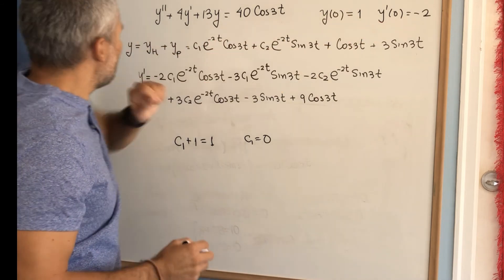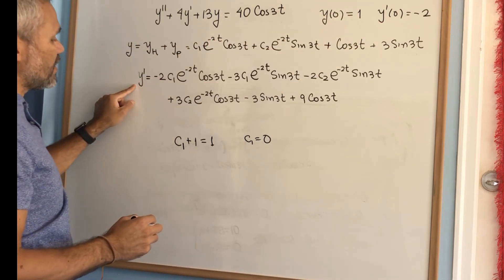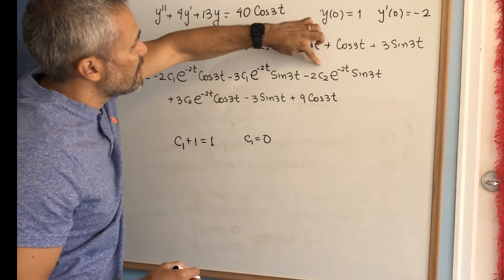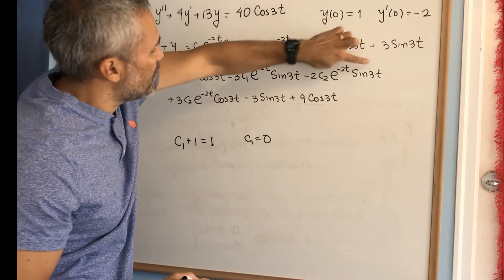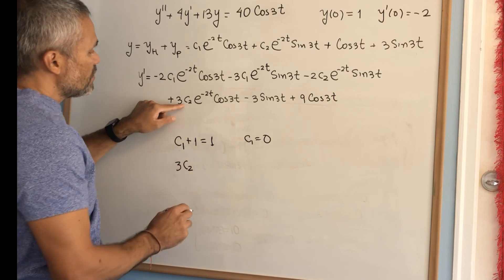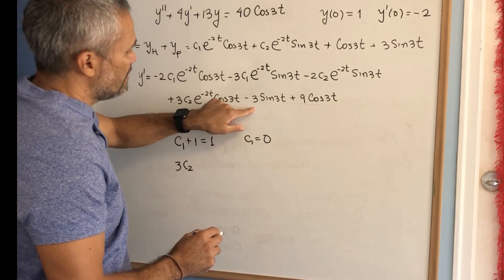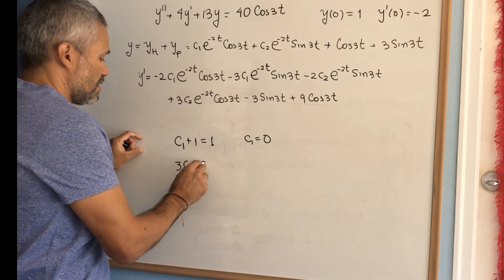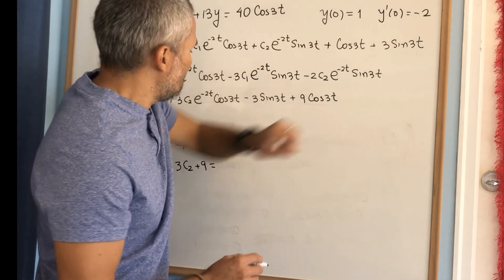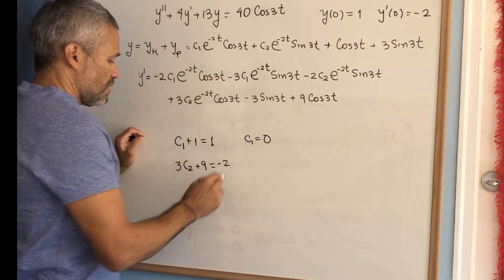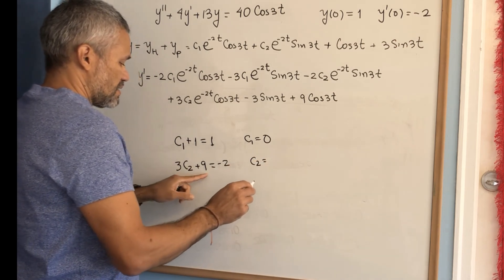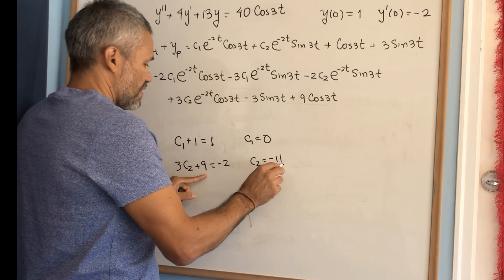For the second equation, we want y'(0) = −2. Since c1 = 0, those terms vanish. Evaluating at t = 0 we get 3c2 + 9 = −2, which means 3c2 = −11, so c2 = −11/3.